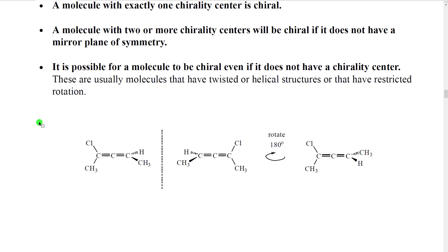This is a really common trick question found on standardized exams. Here's an example — this is an example of an allene. An allene has a carbon-carbon double bond directly attached to, sharing a carbon with, another carbon-carbon double bond. They're fairly uncommon and kind of unstable, so we don't see them that often.